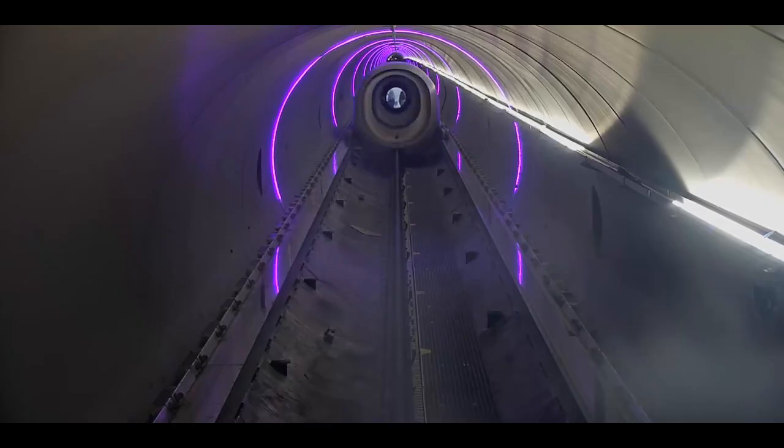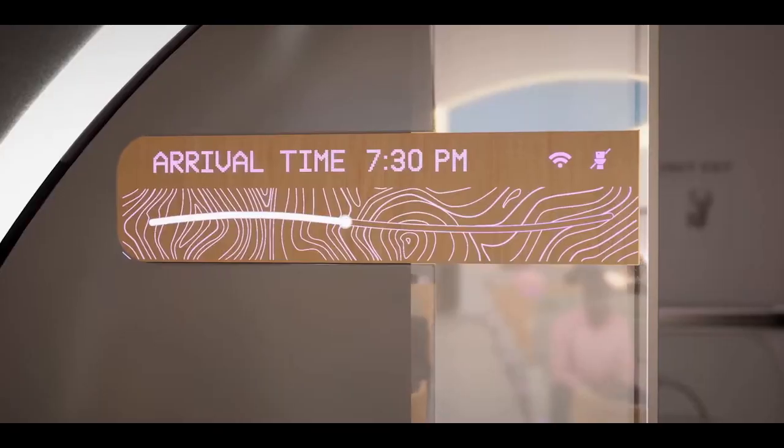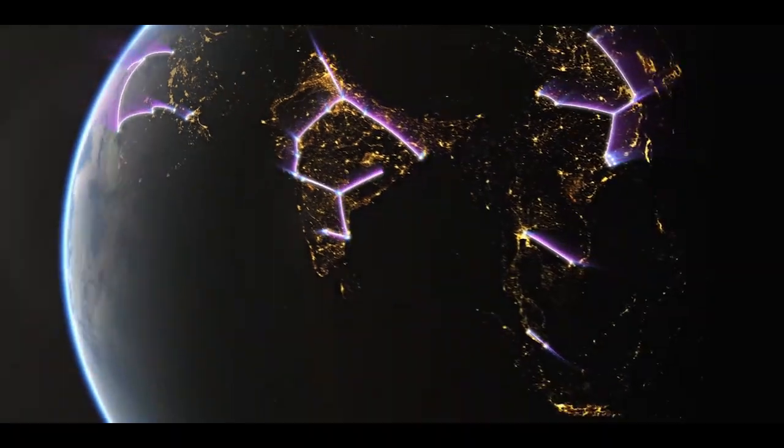Future trains capable of speeds around 500 or 600 km per hour could encompass the globe and help to reduce the effects of air travel on global warming.